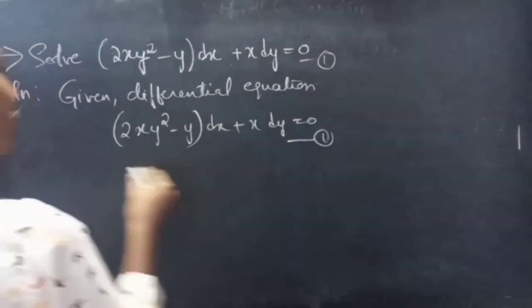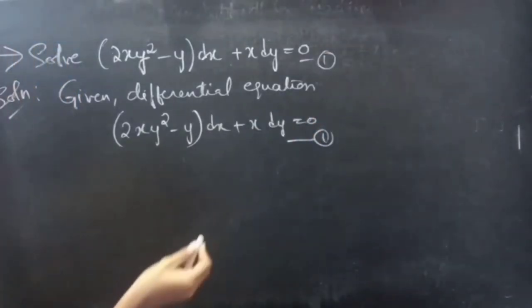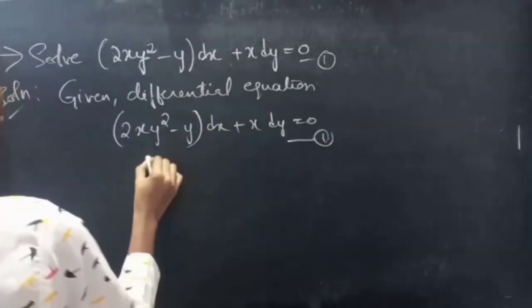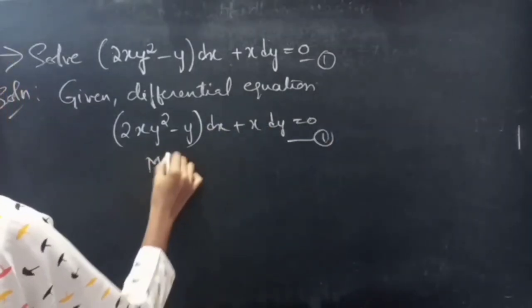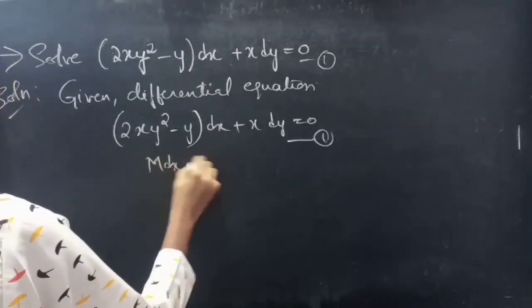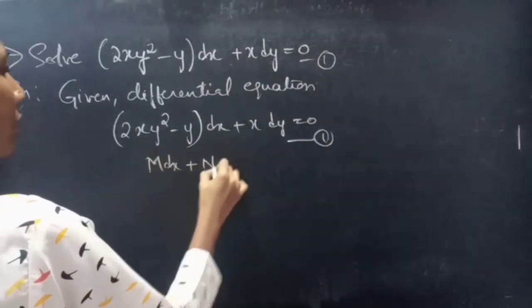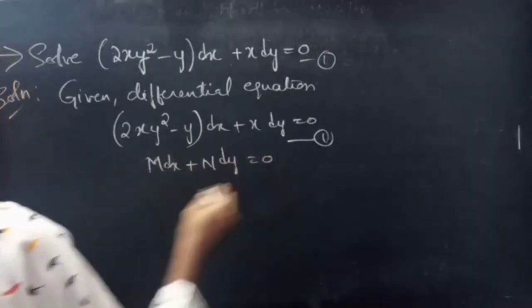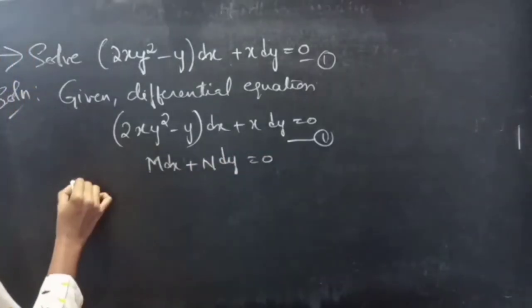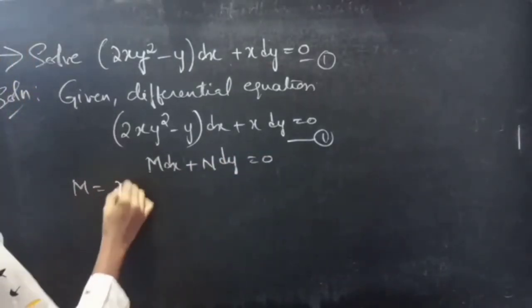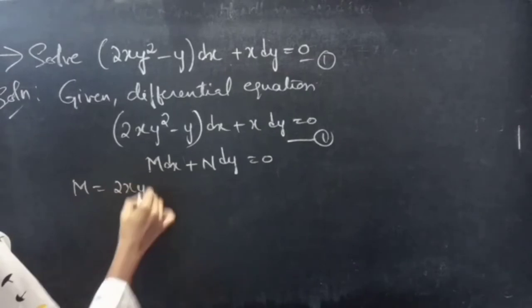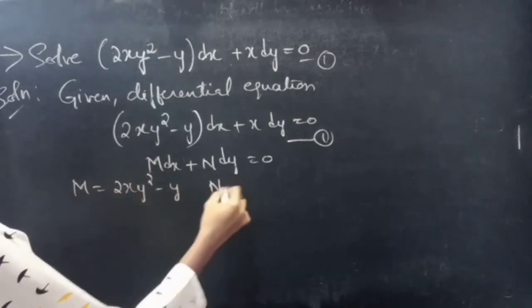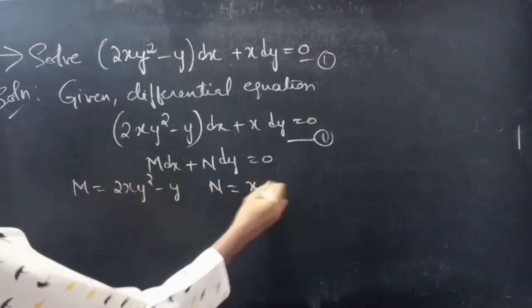We have this in the form M dx + N dy = 0, where M = 2xy² − y and N = x.